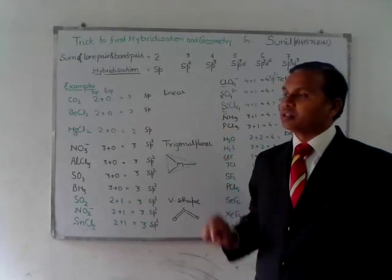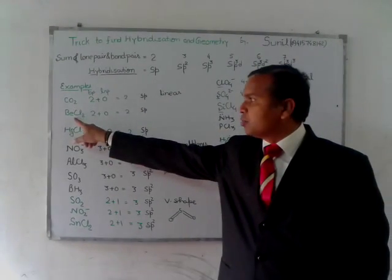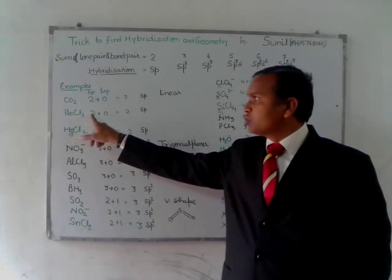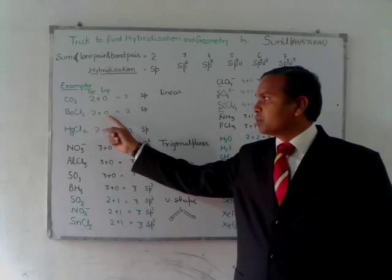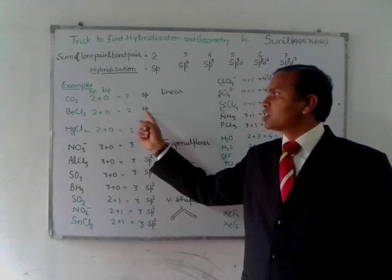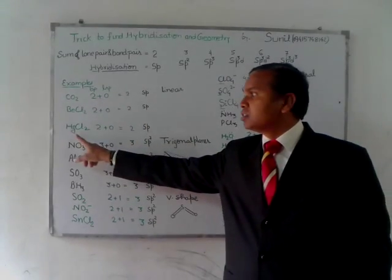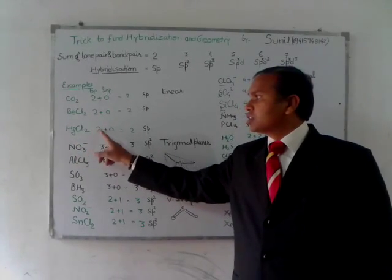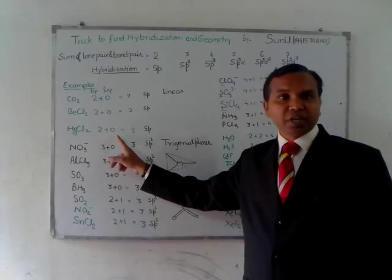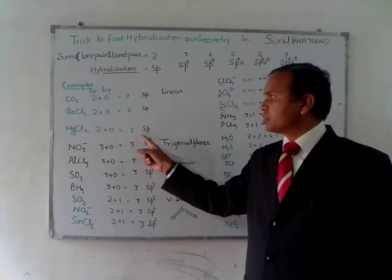With barium chloride, here also we have two bond pair of electron and we don't have any lone pair of electron, so it is also sp hybridized. For HgCl2, mercury has two bond pair of electron and no lone pair, so the hybridization is sp.